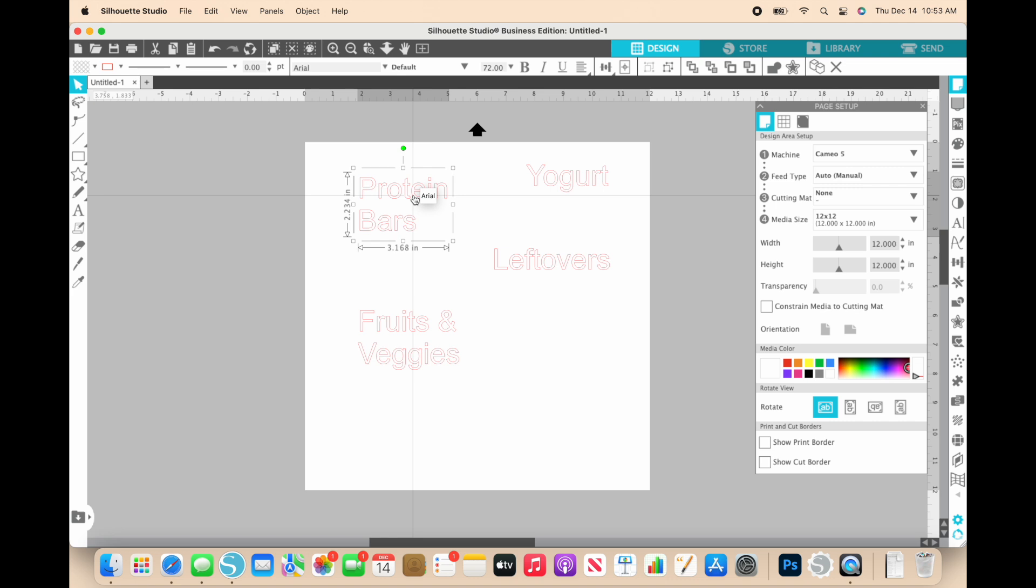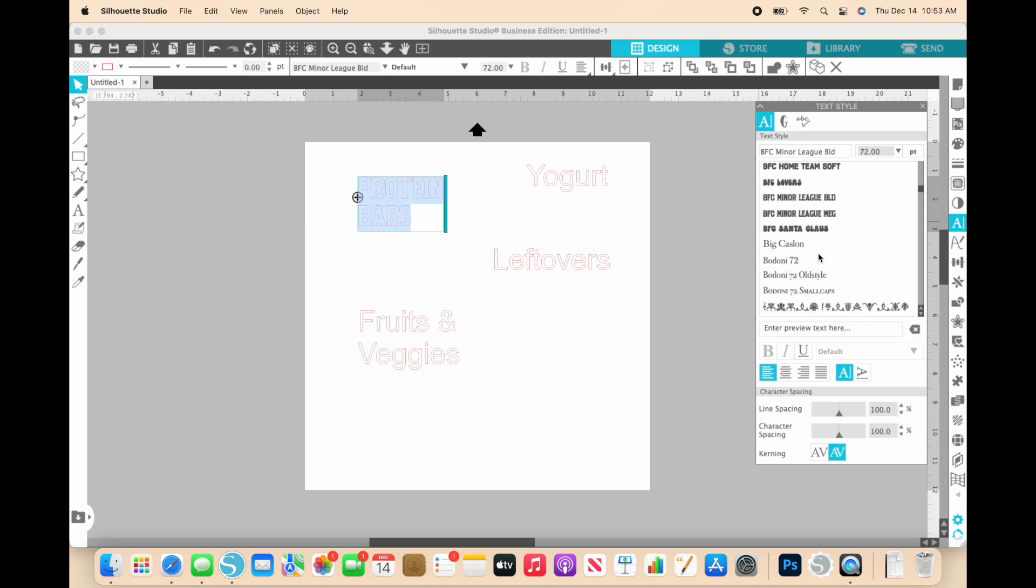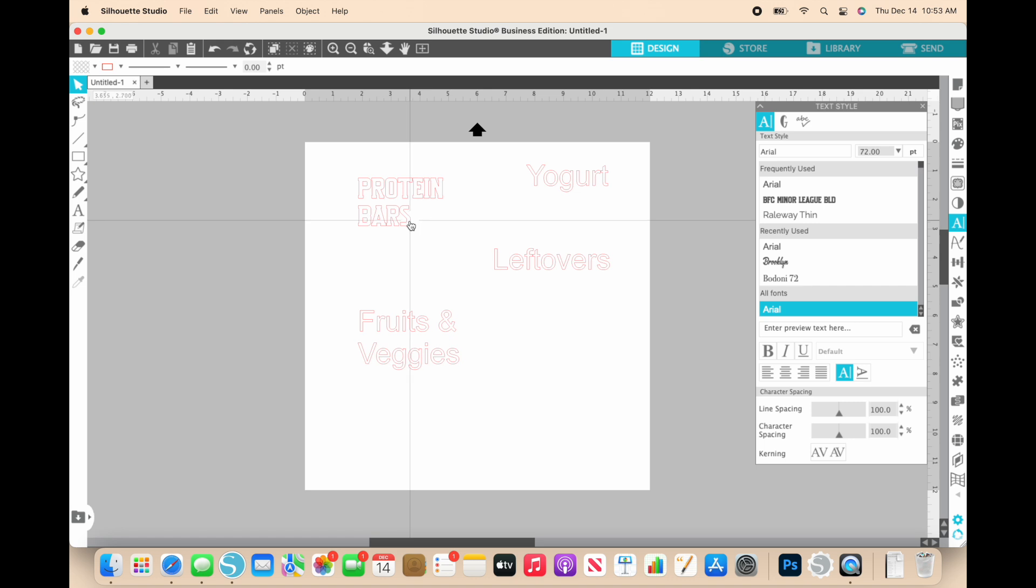So for protein bars, I'm going to go ahead and click that. And then I'm going to double click it. And then I'm going to do command A to highlight everything. And then I'm going to open up my text style panel on the right hand side. And that's going to help me format my text. So I've been using two different fonts for all of my projects lately. One of them is this BFC minor league. And it's just like a really nice bold font. And I love that one. I can't think of what the other one is called off the top of my head. So we are going to go with this one. And I really like this font. I think this is a really great font for labeling things because it's really big and blocky, which for me is really important.